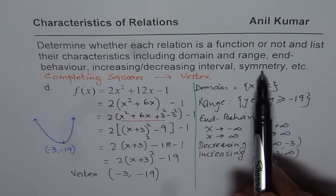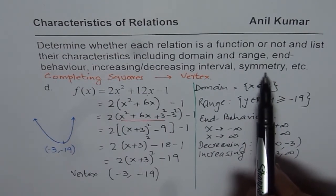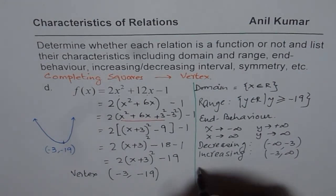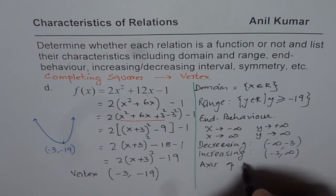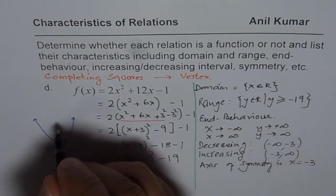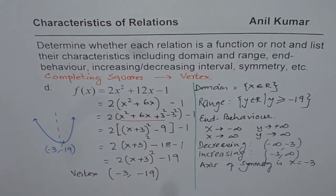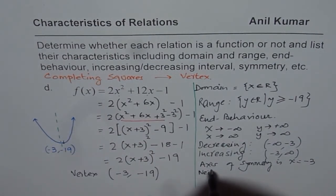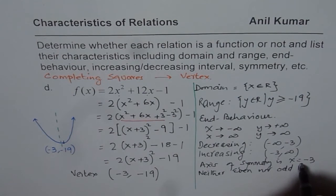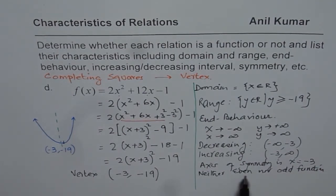It does not have any particular symmetry. When we say symmetry, we are trying to figure out whether it has odd symmetry or even symmetry. But here, we know the axis of symmetry is x = -3. So that is the axis of symmetry, but it is not even or odd function. So it is neither even nor odd function. Since for even function, the axis of symmetry should be the y-axis, x = 0, not -3. So these are a few characteristics which we can write about this particular function.